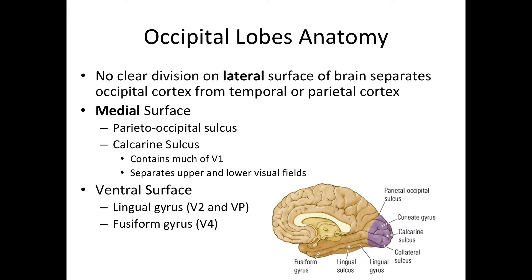What's cool about the calcarine sulcus is that it divides the upper and lower halves of the visual world. Information from our upper visual field will be processed on the lower side of the calcarine sulcus. So if you're looking at a tree, the top of the tree will be processed at the bottom of the brain — underneath the calcarine sulcus.